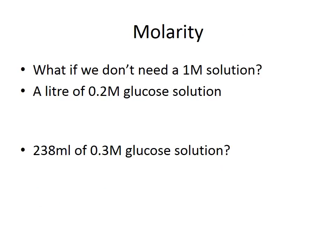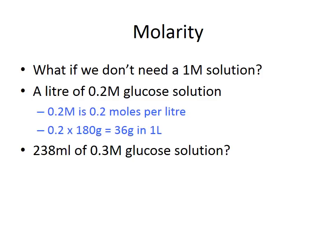What if you don't need a 1 M solution? For example, if you need 1 litre of a 0.2 M glucose solution, then 0.2 M means 0.2 moles per litre. Multiplying 0.2 by the molecular weight of glucose (180) gives 36 g of glucose dissolved in one litre to produce a 0.2 M glucose solution.